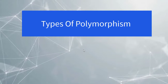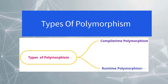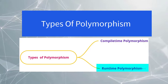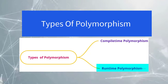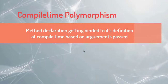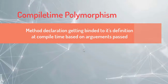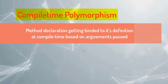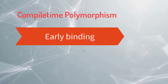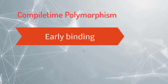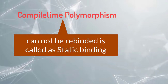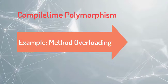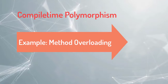Next, we'll discuss about the types of polymorphism. In polymorphism, we have two types: first one is compile-time polymorphism and second one is runtime polymorphism. So what is compile-time polymorphism? Here, the method declaration is getting binded to its definition at the compile-time based on arguments passed. Since the method binding is happening at compile-time, it is also called as early binding. Once it is binded, it cannot be rebinded. Hence, it is called as static binding. The example for compile-time polymorphism is method overloading.